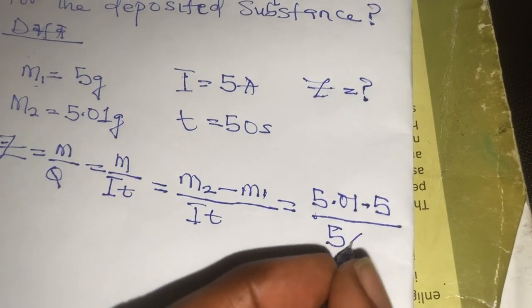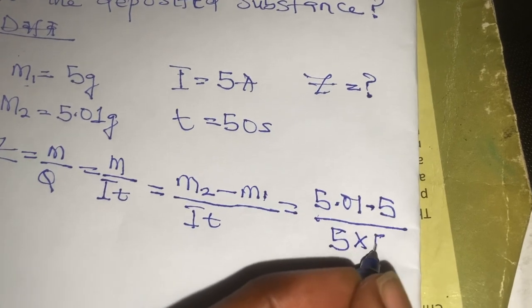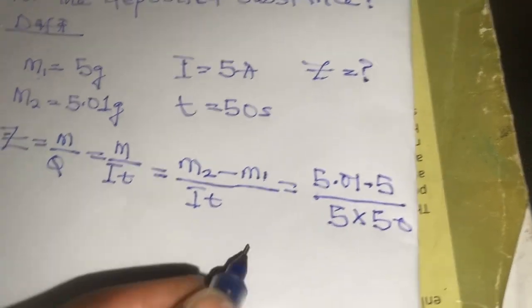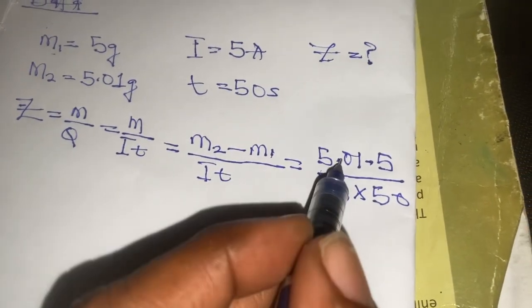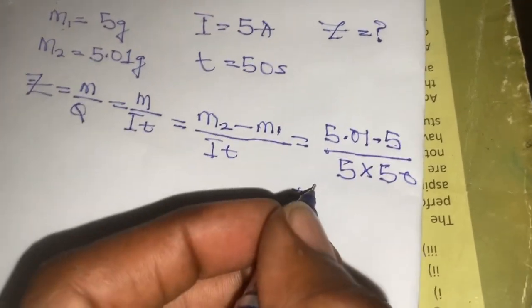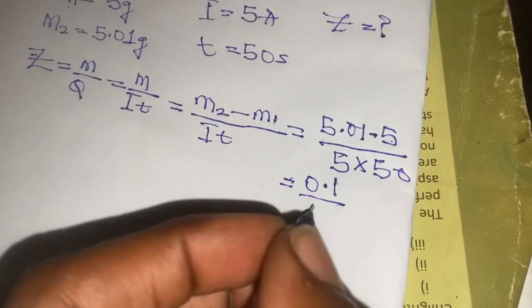5 times T, which is 50 seconds, times 50. And this is going to give us 5.01 minus 5 is going to be 0.1 over...